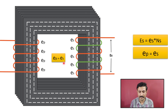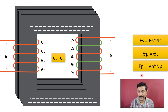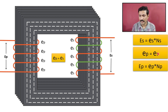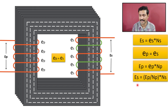We can write ep = es (per-turn EMF). The total voltage applied to the primary is Ep = ep × Np, where Np is the number of primary turns. Substituting this into the equation, we get the relation: Ep/Np = Es/Ns, showing the relationship between primary and secondary turns. Simply put, if we increase the secondary number of turns we get more output voltage, and if we reduce the secondary number of turns we get less output voltage.